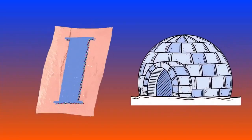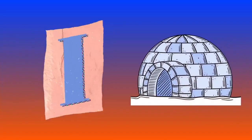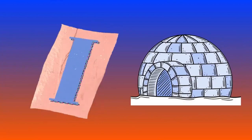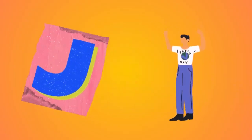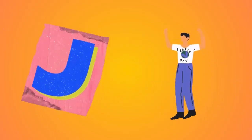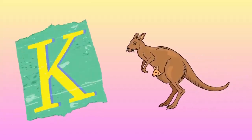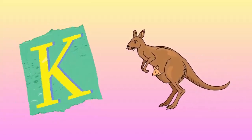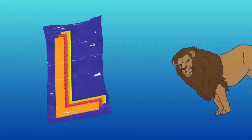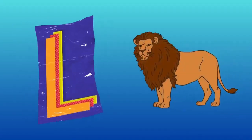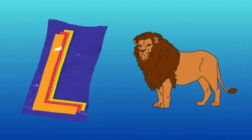I is for igloo, i-i-igloo. J is for jump, j-j-jump. K is for kangaroo, k-k-kangaroo. L is for lion, l-l-lion.